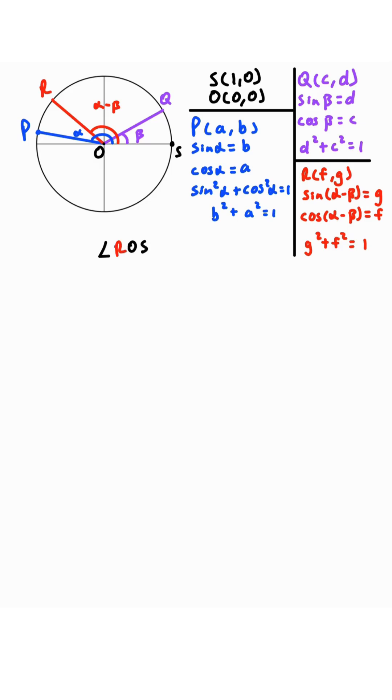Now, consider angle ROS. It's going to have this chord, RS. And this angle, POQ, is going to have this chord, PQ. These two angles and these two chords are going to be congruent with each other. Therefore, RS is equal to PQ. Recall that these are our four points for R, S, P, and Q.